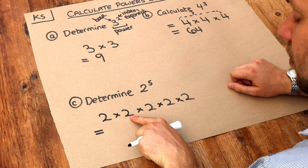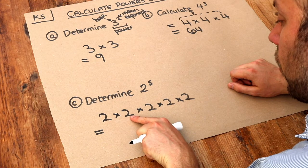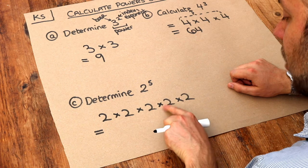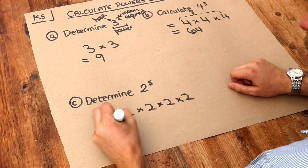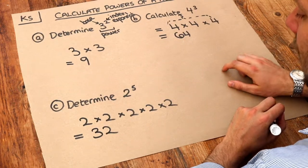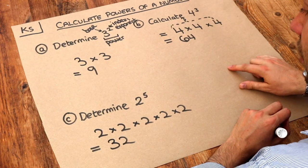Now 2 times 2, that's 4. 4 times 2 is 8. Times 2 is 16. Times 2 is 32. So therefore, 2 to the power of 5 is 32.